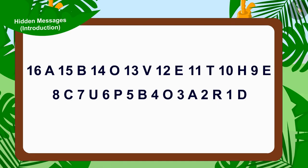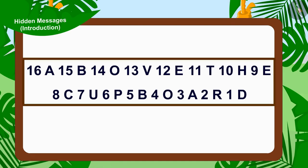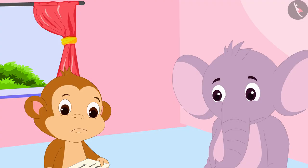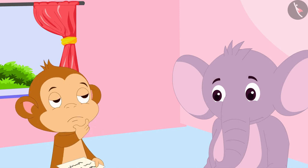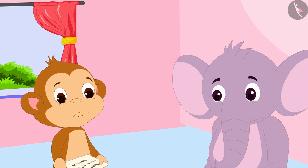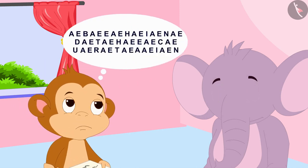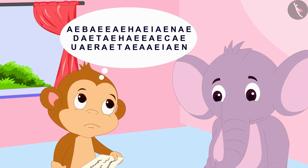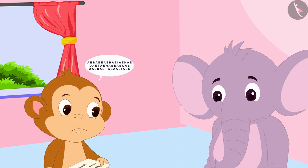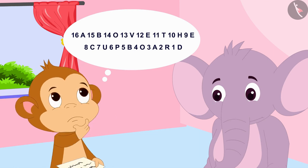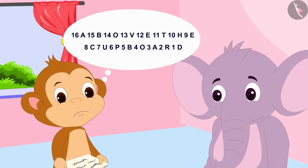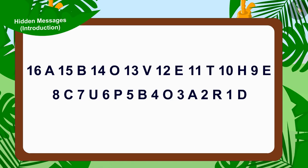This is written in Appu's next letter. Baban got shocked looking at the second letter. He began to think: in the first letter, there were only jumbled alphabets. But in this letter, there are numbers too. What hidden message could there be in this letter? Children, can you help Baban?